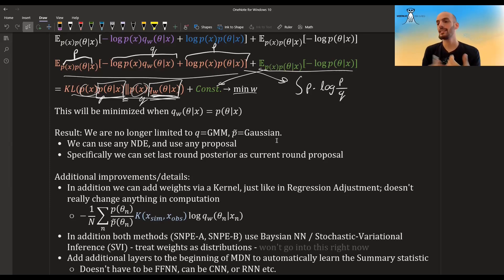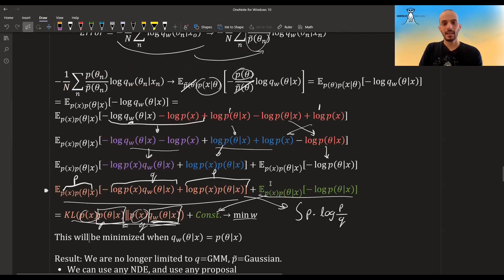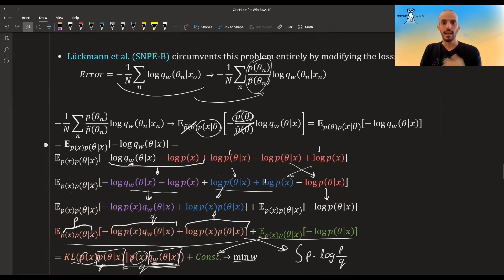We can use the last round posterior as the current round proposal. So if we do it sequentially—we finish the first round, we get a posterior, we use it as the proposal or the proposal prior for the next round, we get the new posterior, we use that as the proposal for the next round—and it doesn't matter which proposal we are using. We are always getting in the end something that is the true posterior, or as close as it gets to the true posterior using our algorithm.